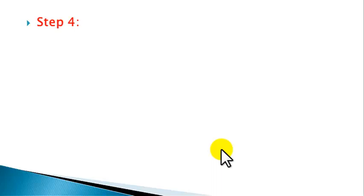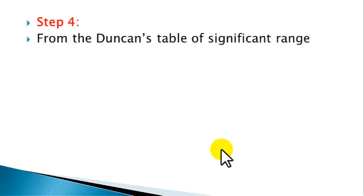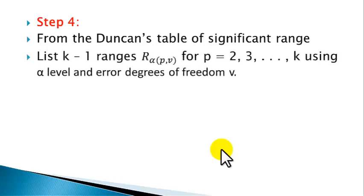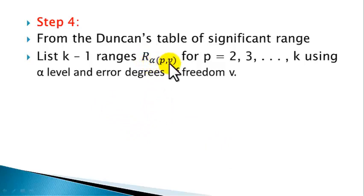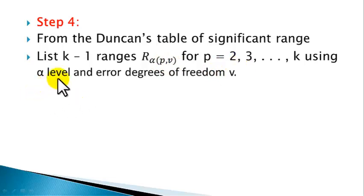Step 4: From Duncan's table of significant range, list k-1 ranges denoted by r-alpha in bracket (p, v), for p running from 2 to k, using alpha level and error degrees of freedom v — that is, v is the error degrees of freedom.